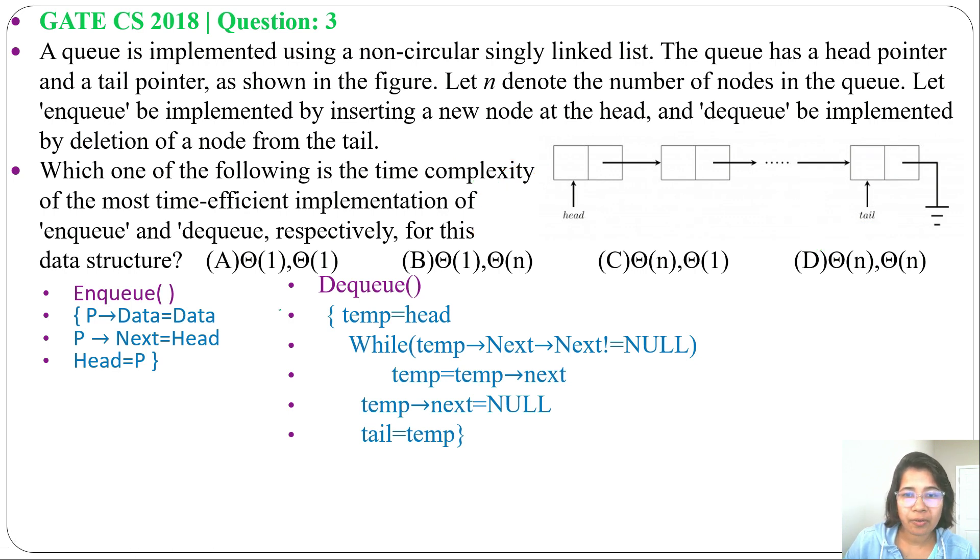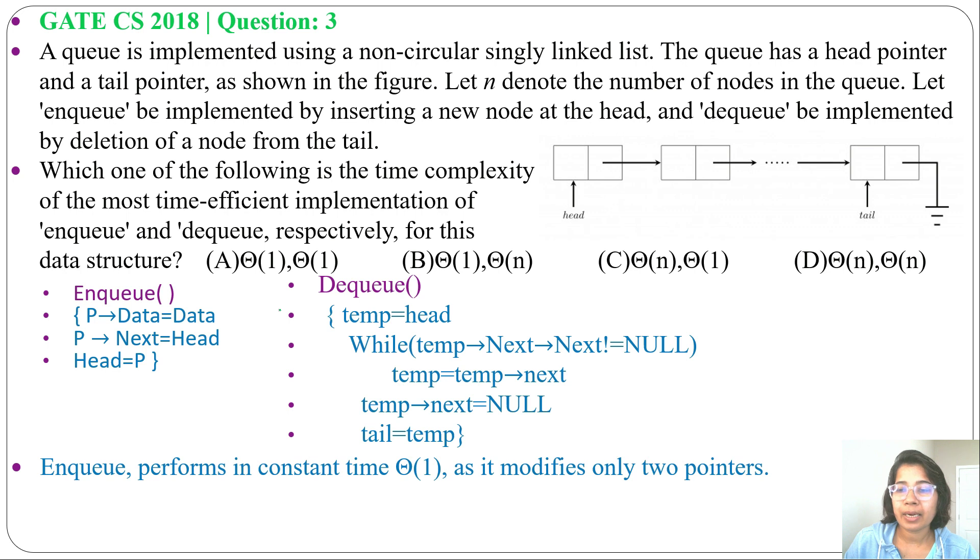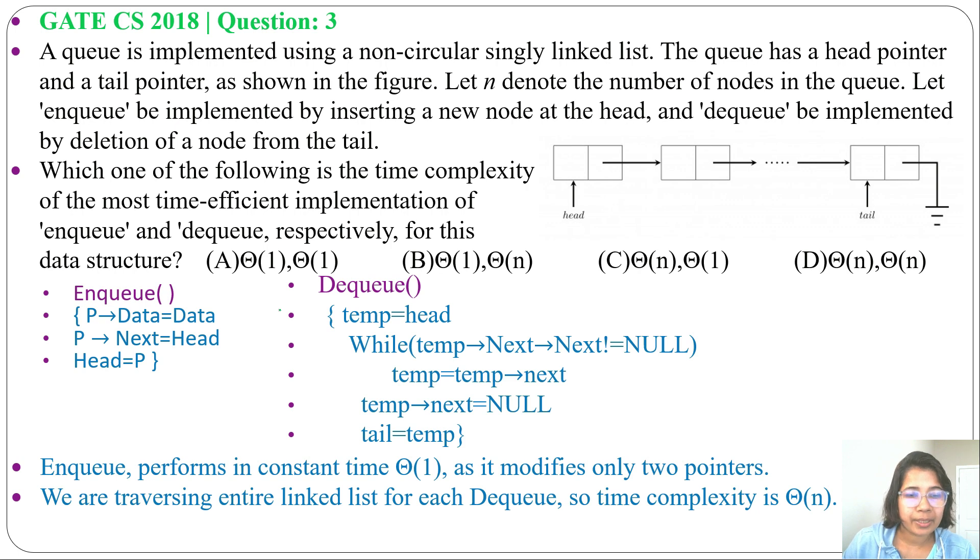Running time will be theta of n as for dequeue we are traversing the whole linked list. Dequeue is order of 1 but for that dequeue we are traversing the whole linked list, that's why running time is theta of n. For enqueue running time is theta of 1, for dequeue running time is theta of n.